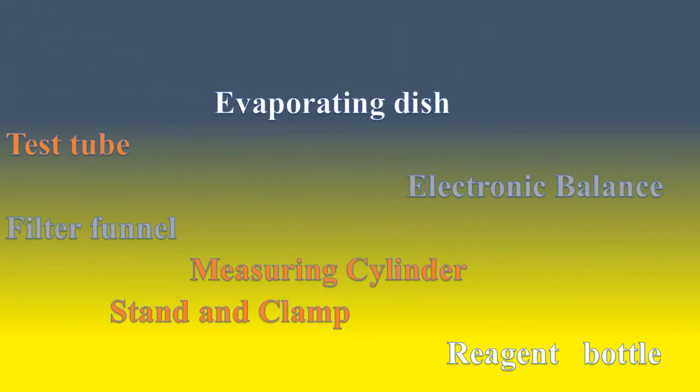Next we have Evaporating Dish, Test Tube, Filter Funnel, Electronic Balance, Measuring Cylinder, Stand and Clamp, and Reagent Bottle. All of these are laboratory apparatus that are used in the science lab or laboratory on a daily basis.